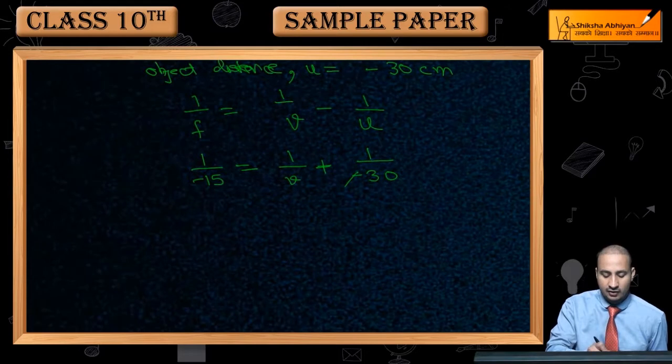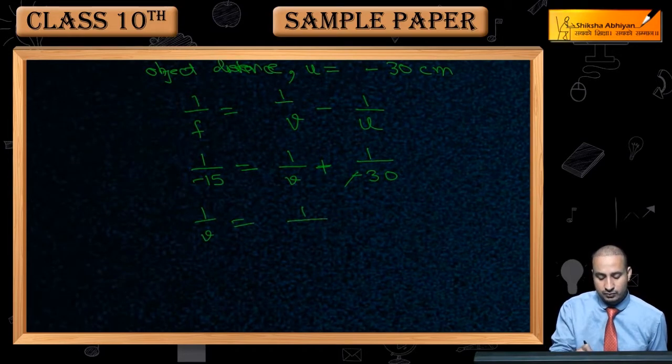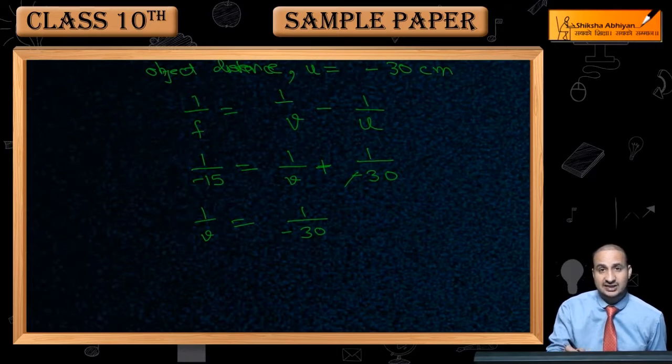You can see that 1 by v is equal to minus 1 by 30, because this plus goes to left side, and negative is equal to minus.